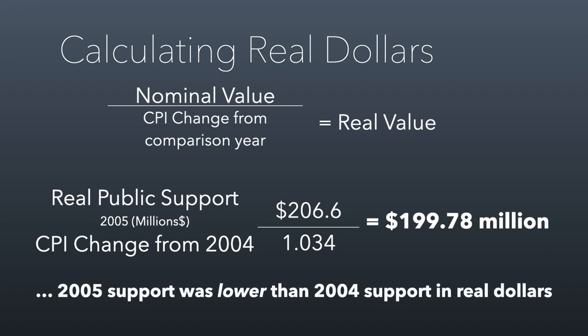What that actually means is that 2005 support was actually lower than 2004 support in real dollars. But imagine if the board of directors ever had that conversation when the CEO of March of Dimes reported annual financials. Do you think the CEO said, 'we actually have less money because in real dollars our fundraising shrunk'? Or do you think the CEO said, 'we've got $206 million versus the $201 million we had the year before'? It was probably the second. The CEO probably talked about how they grew fundraising by $5 million, when in reality prices were growing faster such that the real dollar value of their public support shrunk.